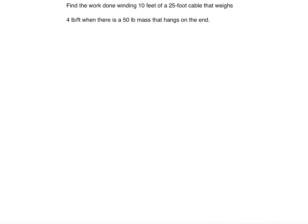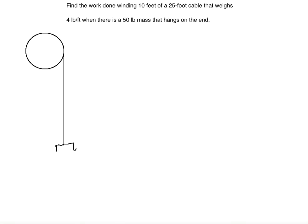I'm going to draw the picture first. I'm going to be winding 25 feet of rope — well, actually 10 feet of a 25-foot cable — and there's also a mass attached at the very end. The shape of this mass can be anything so we'll just label it as a block; it will not change its weight. We'll indicate that this is 50 pounds.